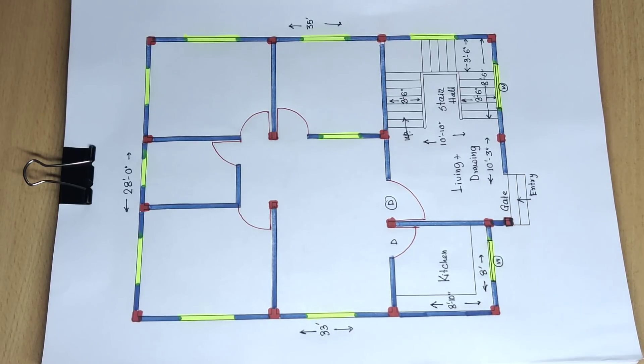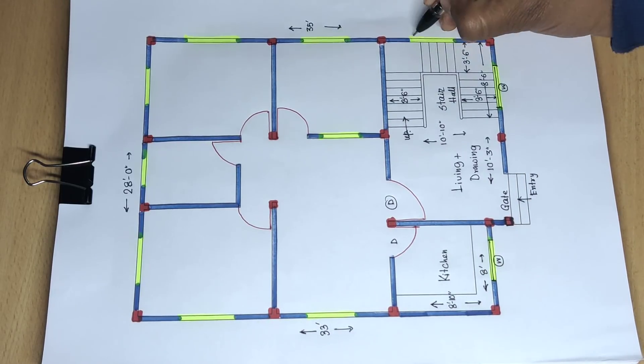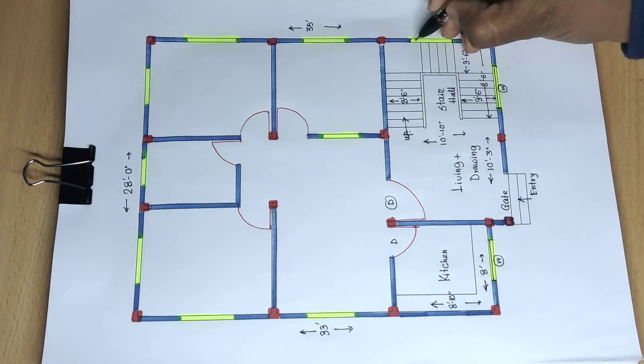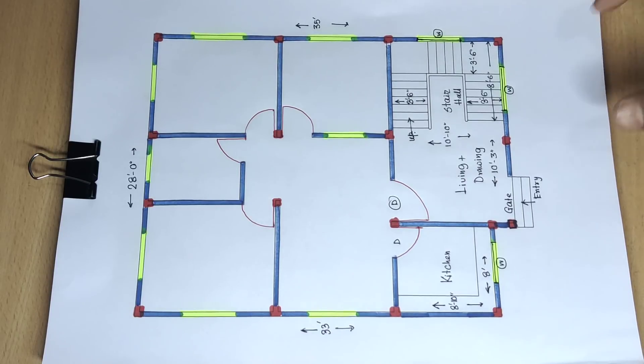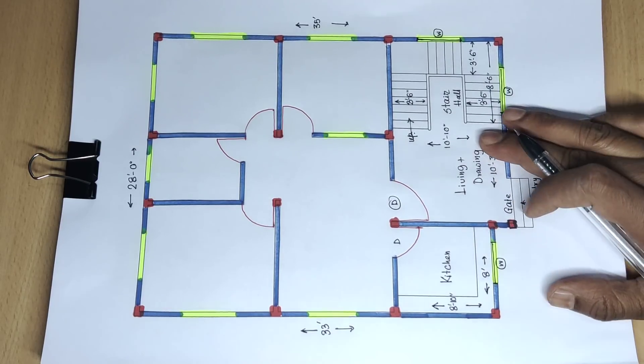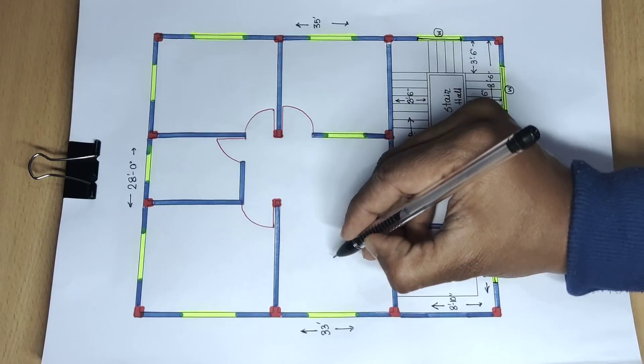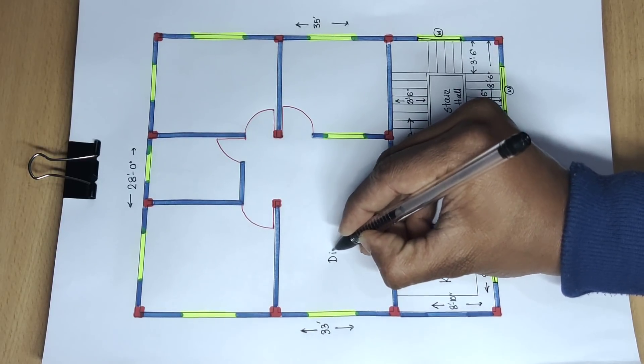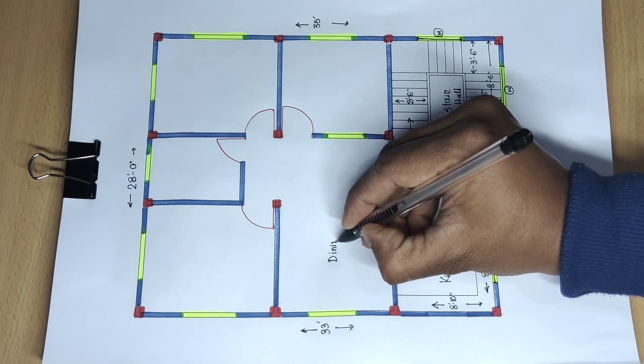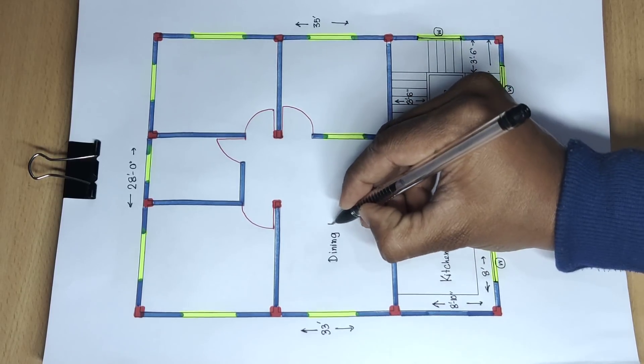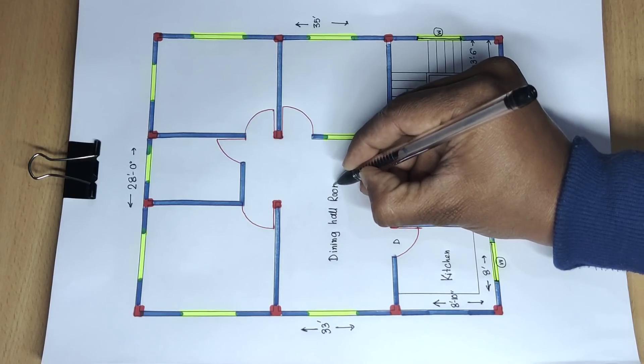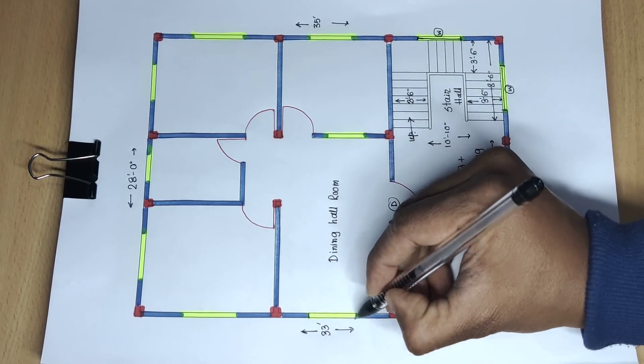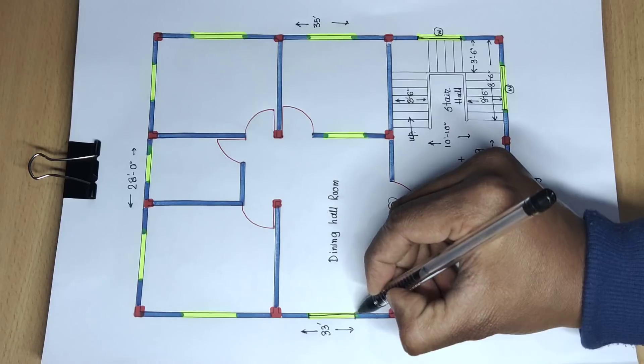10 inch. Now this side window is optional. If you don't have space on the side, you can close this window. Here is the dining hall room with a window on this side.